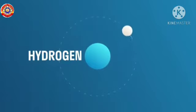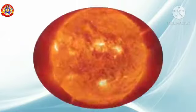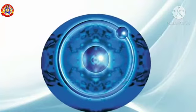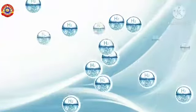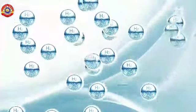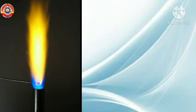Let us familiarize ourselves with the non-metal hydrogen. Hydrogen is a chemical element with the symbol H and atomic number 1. It is one of the lightest elements in the periodic table. Do you know the major component present in the sun and stars is hydrogen? It is present only in very small quantity in free state. Most of the hydrogen on Earth exists in molecular forms such as water or organic compounds. It is a colorless, odorless, combustible gas with a molecular formula H₂.